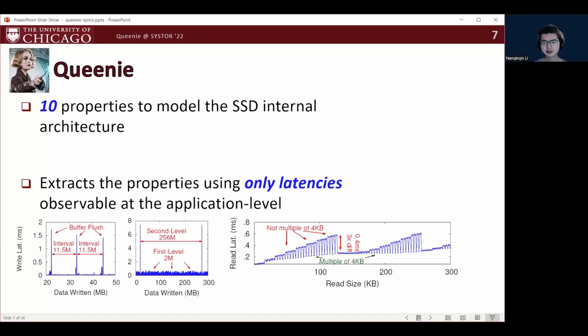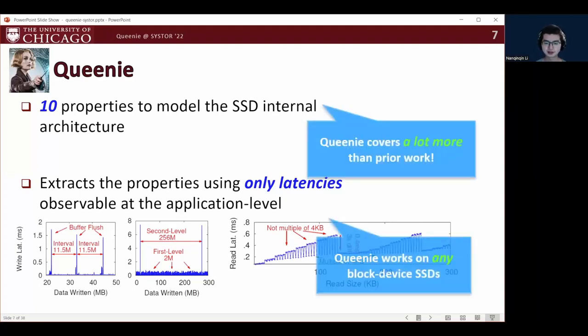To probe and extract these 10 properties, QINI takes the simple approach of observing the latency distribution of a carefully designed IO workload to speculate the value of the property. To the best of knowledge, QINI covers more SSD properties than prior work and by using only the latencies observable at application level, QINI does not require special software or hardware and can be applied to any block device SSDs.